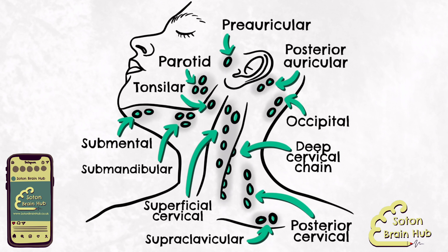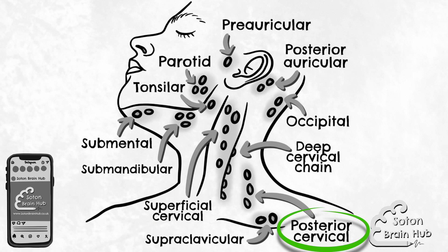Finally we have the superficial cervical lymph nodes and the posterior cervical lymph nodes. The anterior-most superficial cervical lymph nodes lie close to the anterior jugular vein and collect lymph from the superficial surfaces of the anterior neck. The posterior cervical nodes lie close to the external jugular vein and collect lymph from the superficial surfaces of the posterior neck.